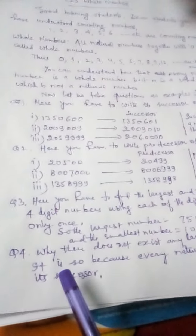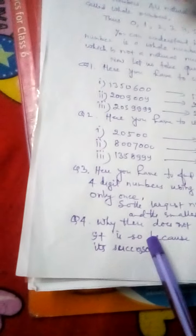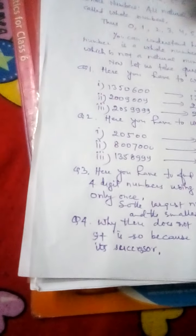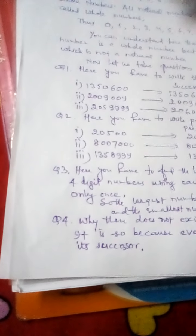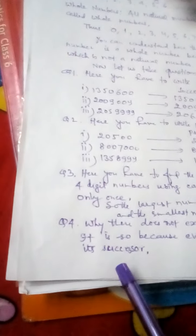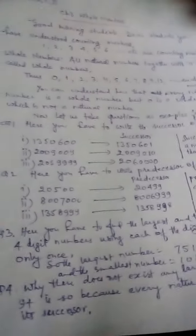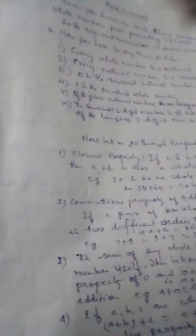Question number 4: Why does there not exist any largest number? The reason is because every natural number has its successor. Suppose you think that 1 crore is the largest number, but if you add 1 it will be 1 crore 1. So it is not the largest one. Anytime you can get a number which is one more than the given number, so there is no largest number.